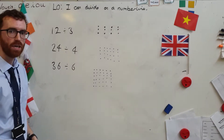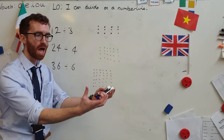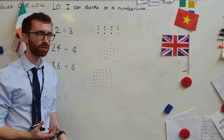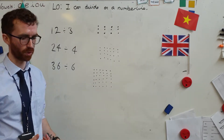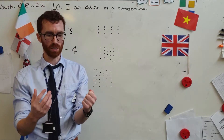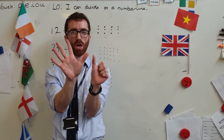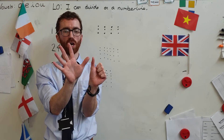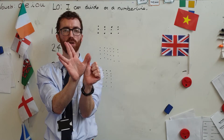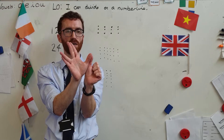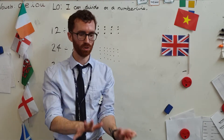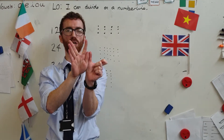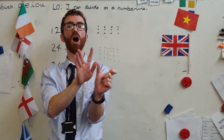Division is when we share a number into equal amounts. So for example, if I had six and I do six divided by two, I'm sharing it into equal amounts. Six divided by two is three — I share it into two equal groups of three.